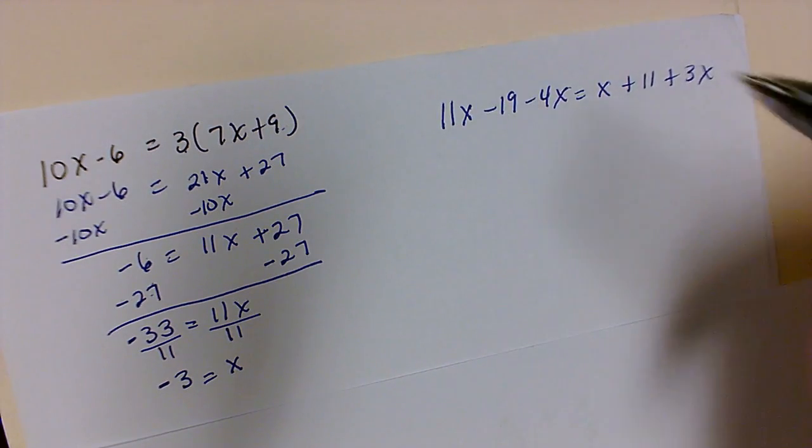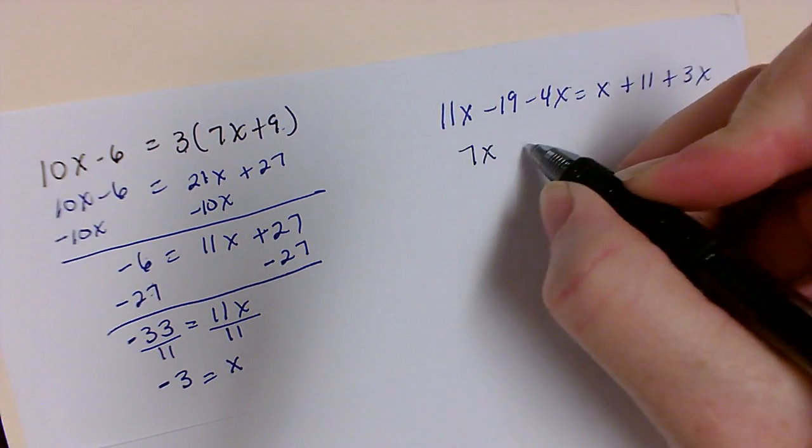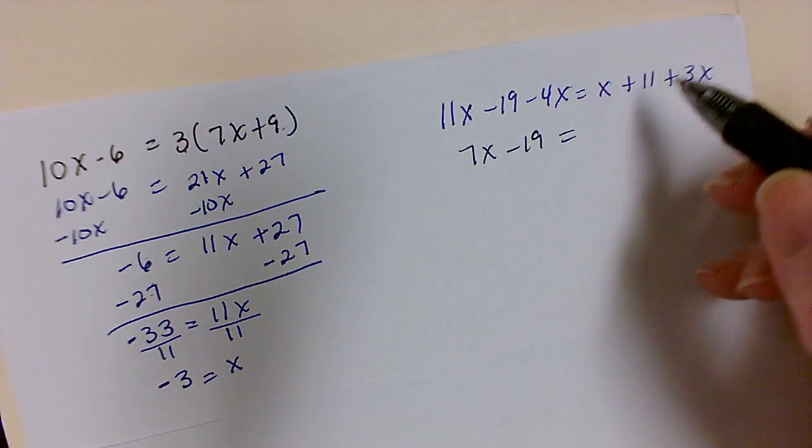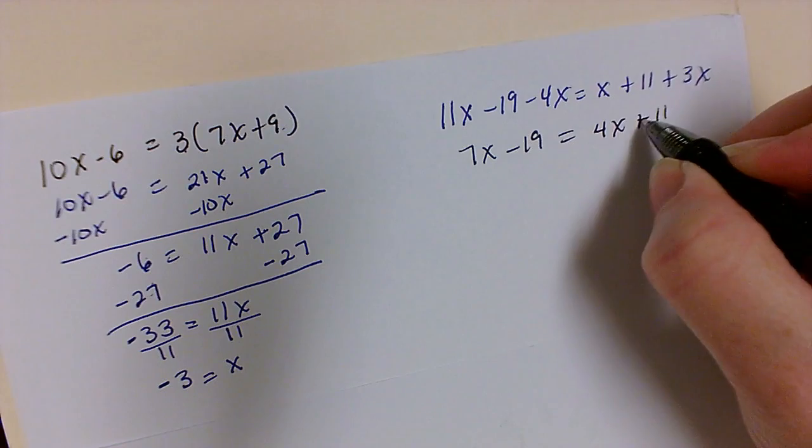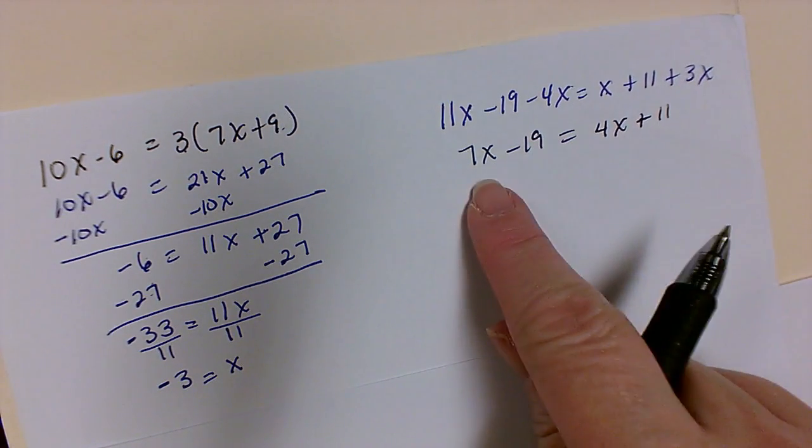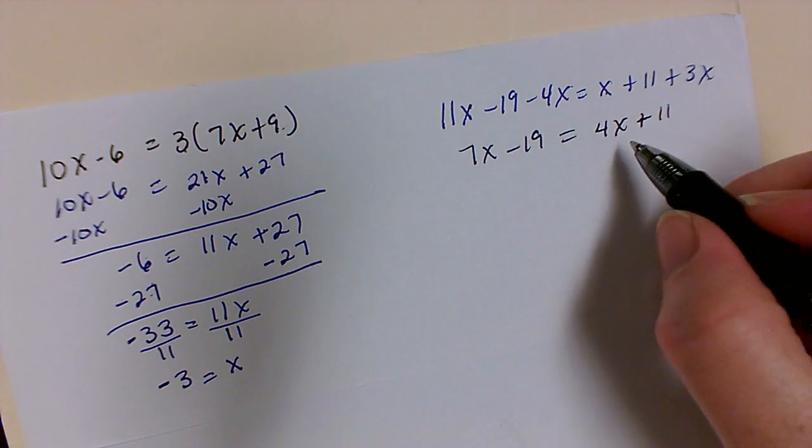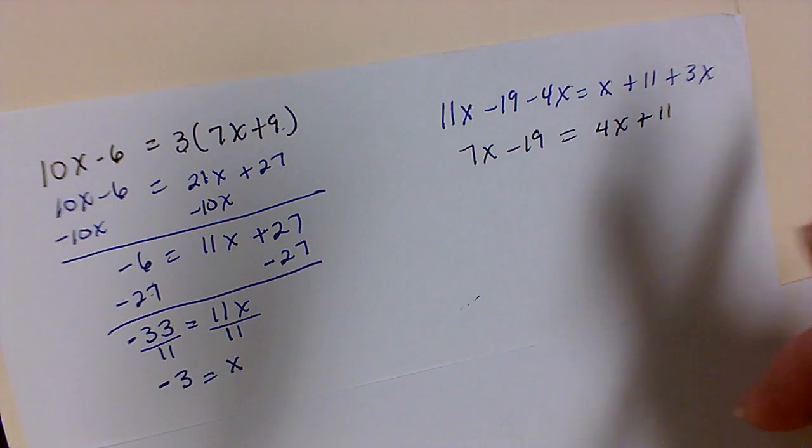So 11x minus 4x, got 11 minus 4 is 7, x minus 19, and here I have 1x plus 3x will get me 4x plus 11. Now we're going to do the same thing that we did on the first equation over here on this equation.